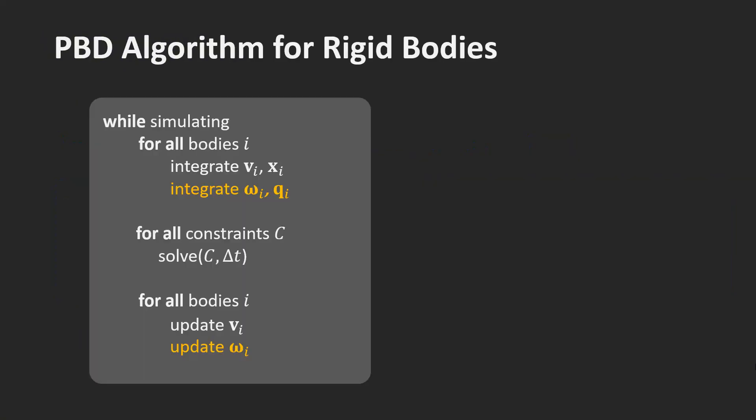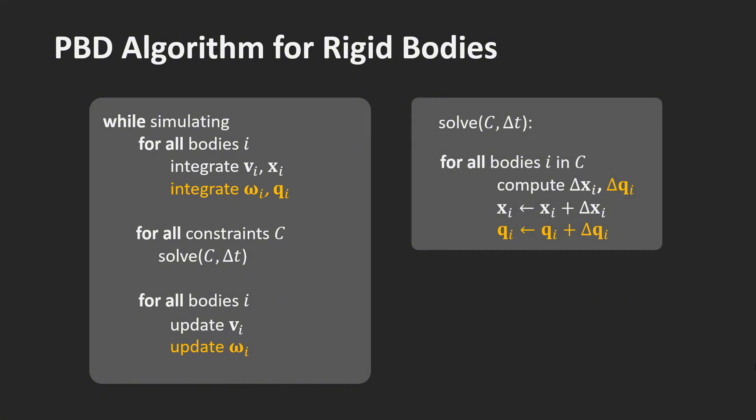Now let's have a look at how we can extend the position-based dynamics algorithm to handle rigid bodies. In addition to handling the linear quantities x and v, we must now also handle the rotational quantities omega and q. We need to integrate them in time and update them after solving the constraints.